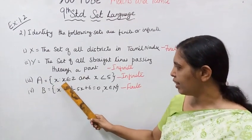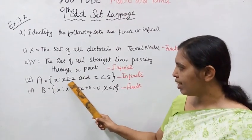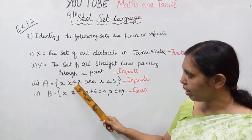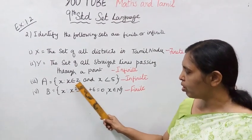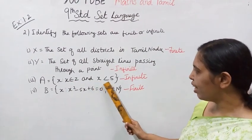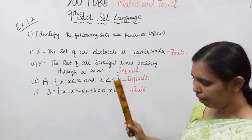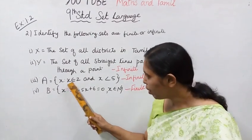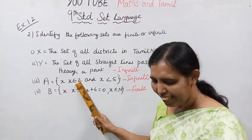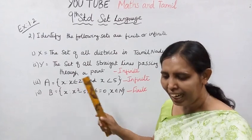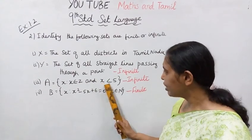Third example: A = {x: x∈Z and x<5}. X belongs to Z, the integers. X belongs to N, natural numbers. X is less than 5.